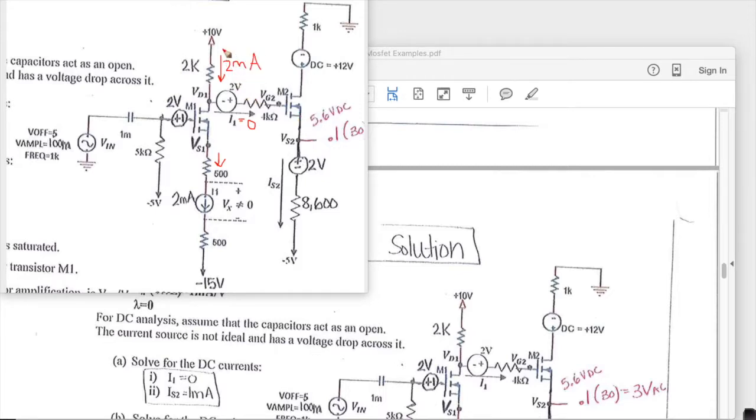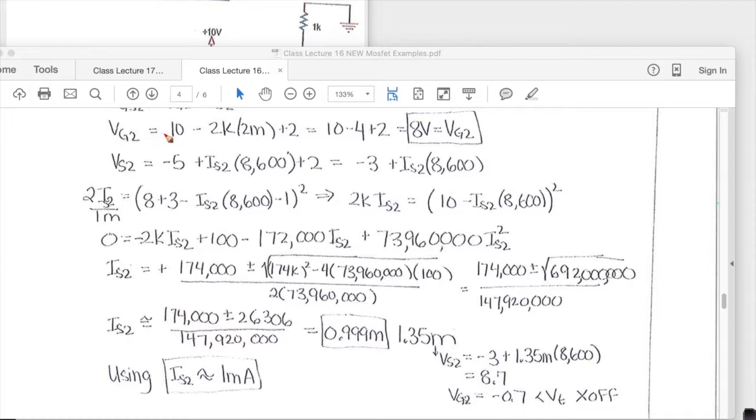So with that knowledge we can say that the voltage at VG2 we know is 10 minus this drop which is 4, 2K times 2 milli. So this is a plus sign, this is a minus sign, and this is a plus. And then there's no drop across here and that's equal to VG2. So that gives us 10 minus 4 plus 2 for a value of 8 volts for VG2.